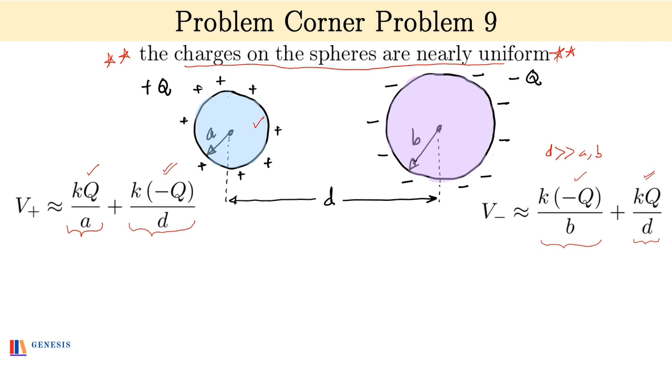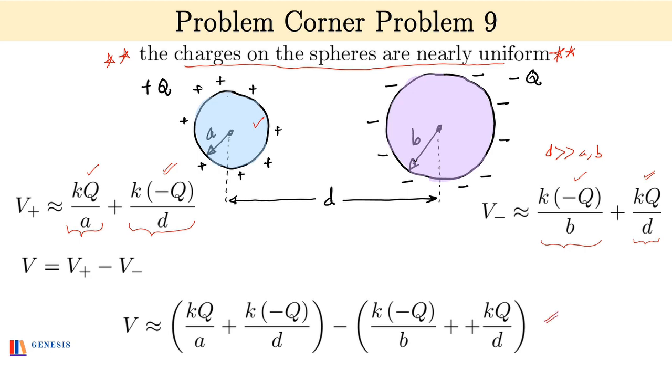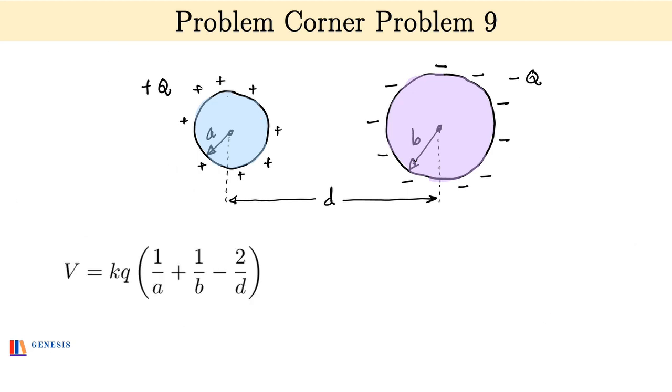And now the potential difference between them is V equal to V plus minus V minus. And if we substitute the values and simplify, we get V is equal to KQ times 1 by A plus 1 by B minus 2 by D.